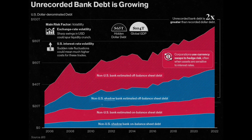The scale of hidden dollar debt around the world is huge — no less than 65 trillion dollars in unrecorded dollar debt circulates across the financial system of non-US banks and shadow banks. To put this in perspective, global GDP sits at 104 trillion, so we're talking nearly two-thirds of global GDP in hidden dollar debt.